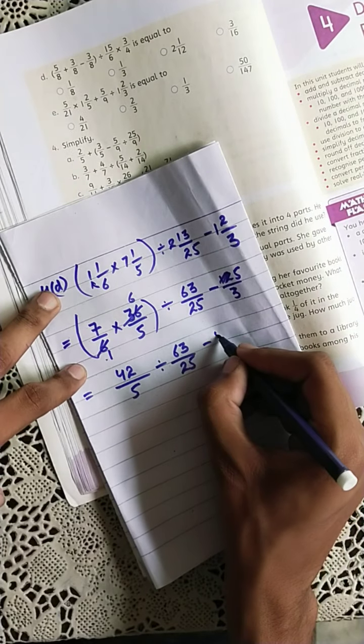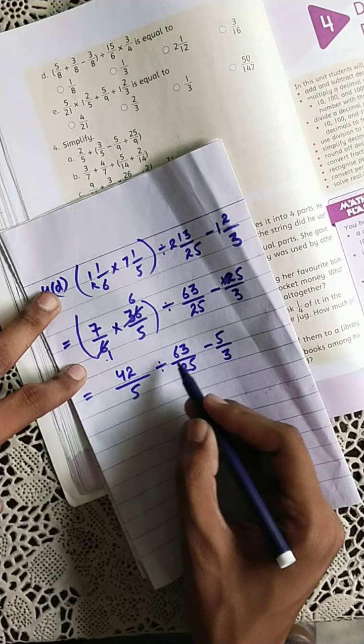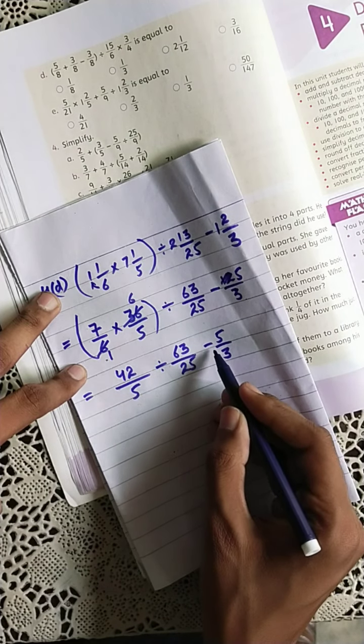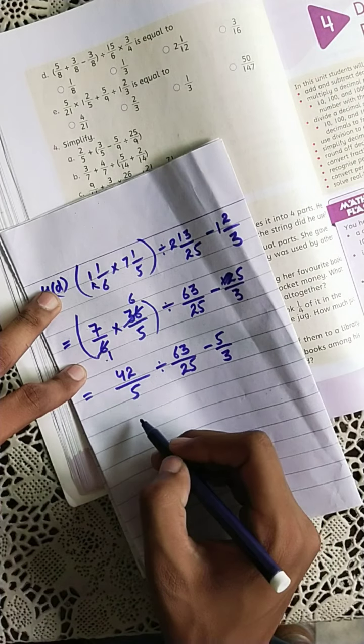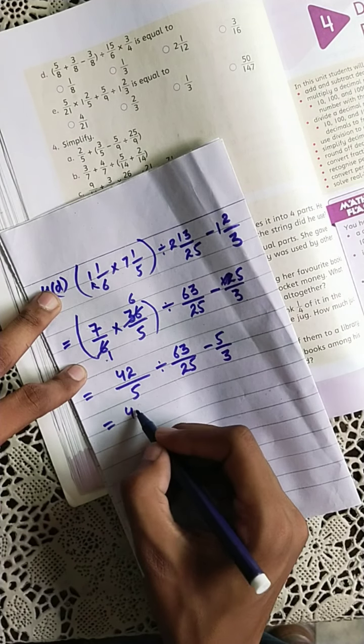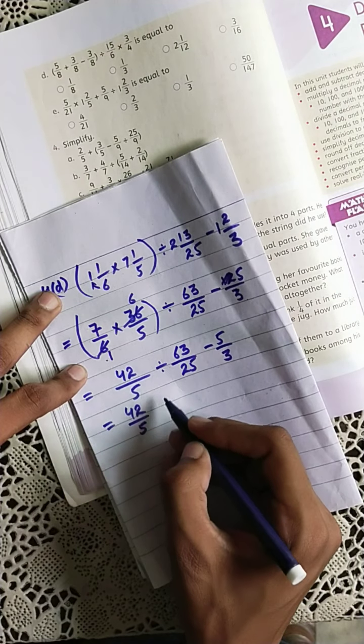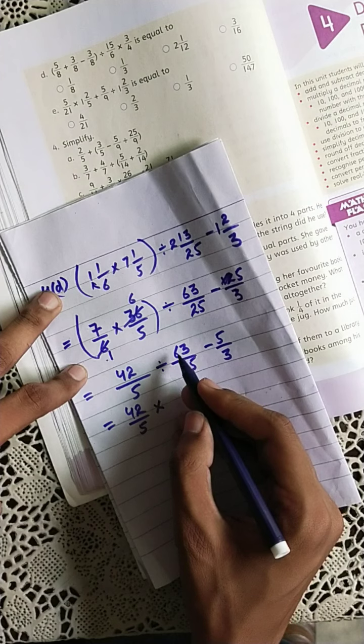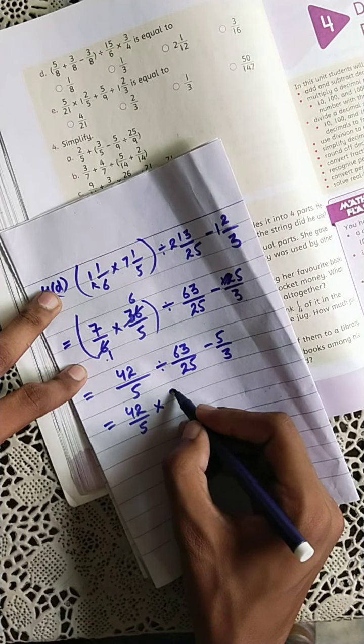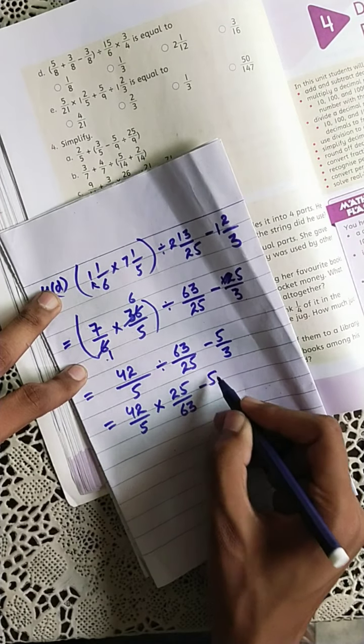Now solve the division sign because in division and subtraction, division sign obviously will be solved first according to the BODMAS rule. So 42 over 5, first fraction is kept same as it is, change this division sign into multiplication and take the reciprocal of the next fraction which is 63 over 25, so change to 25 over 63, and minus 5 over 3.